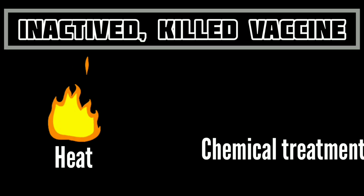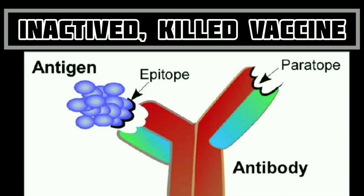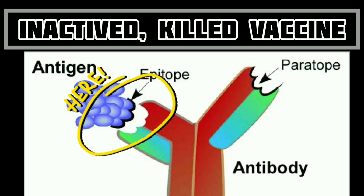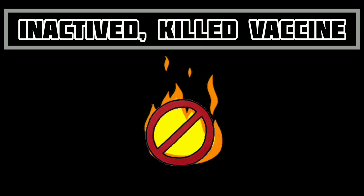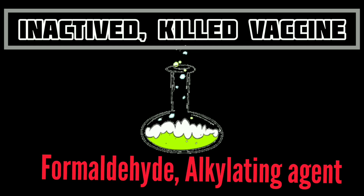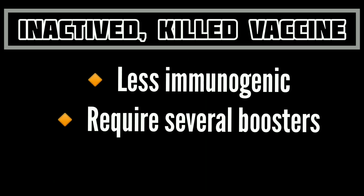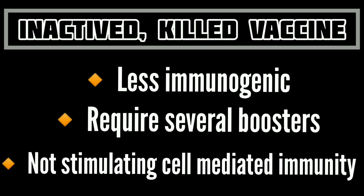Inactivated or killed vaccines are produced by inactivation of pathogenic organisms by heat or chemical treatment so that organisms are unable to multiply in the host. Inactivation is carried out in such a way that the structure of the epitope — the part of an antigen molecule to which an antibody attaches itself — is maintained on the surface of antigens. Heat treatment is generally not satisfactory since it can cause protein degradation and loss of some epitopes. Therefore, chemical inactivation using formaldehyde or other alkylating agents is more common. Inactivated vaccines are effective but less immunogenic, so they often require several boosters and normally do not adequately stimulate cell-mediated immunity or secretory IgA production. Here are examples of inactivated vaccines.